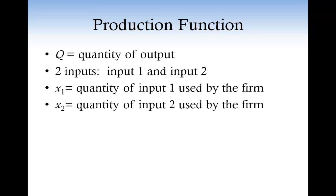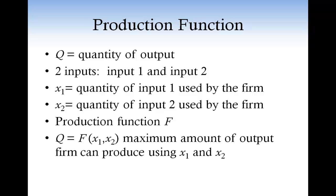Now, if the technology available to the firm is represented by the production function f, then we have that Q equals the function f calculated at the point x1, x2. That is, the quantity produced by the firm is the maximum amount of output that the firm can produce by using x1 units of input 1 and x2 units of input 2. Is it clear? Not really. Can you give me an example?